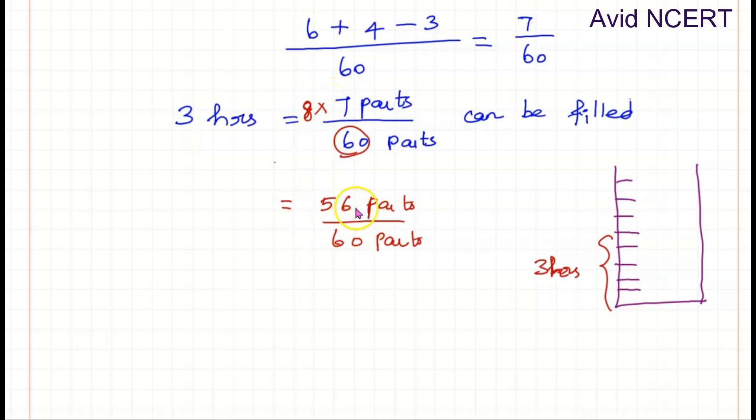So 56 parts can be filled in 8 times 3 hours, which equals 24 hours. 56 parts can be filled in 24 hours. So the remaining, out of 60 parts, 56 parts is filled, which means the remaining 4 parts out of 60 parts has to be filled.